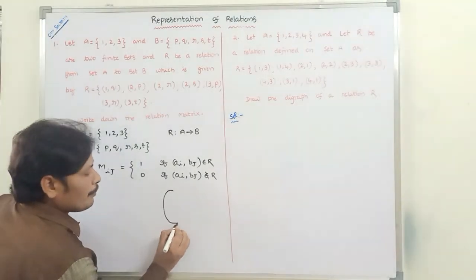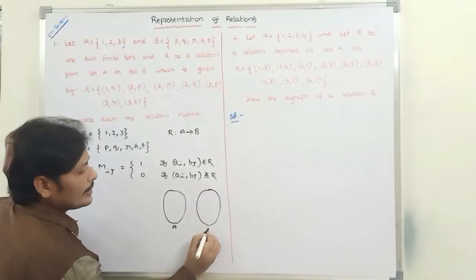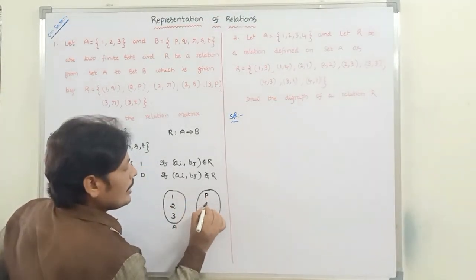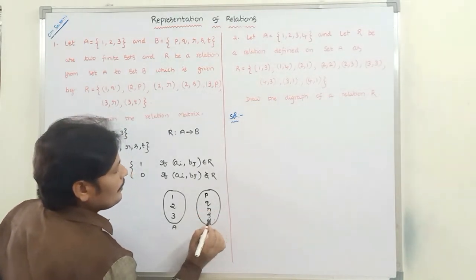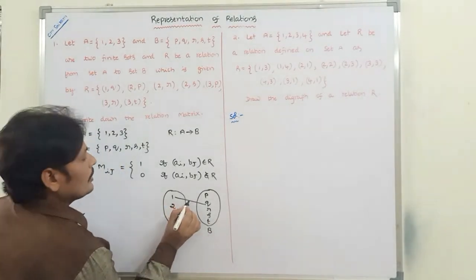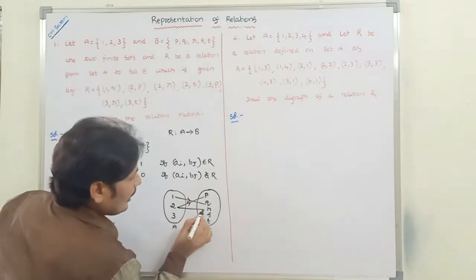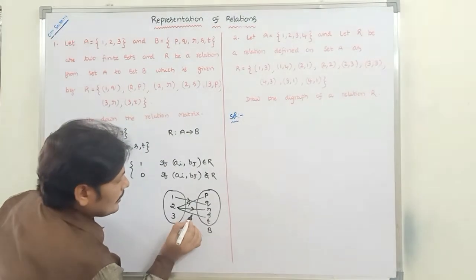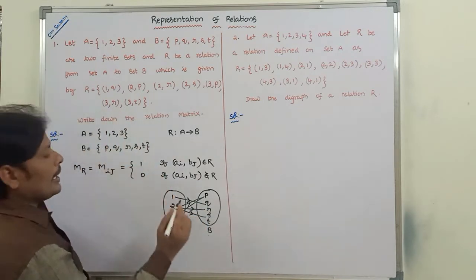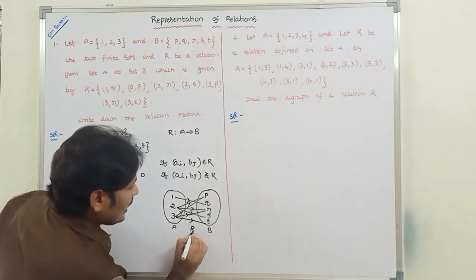This can be represented very easily. Set A contains the elements 1, 2, 3 and set B contains the elements P, Q, R, S, T. The relation R consists of the pairs: 1 is related with Q, 2 is related with P, 2 is related with R, 3 is related with R, and 3 is related with T.